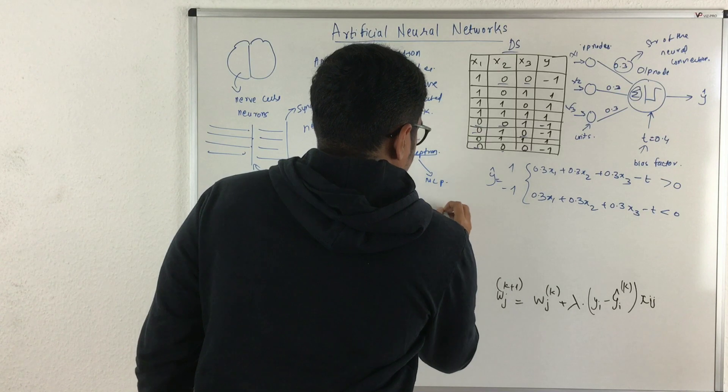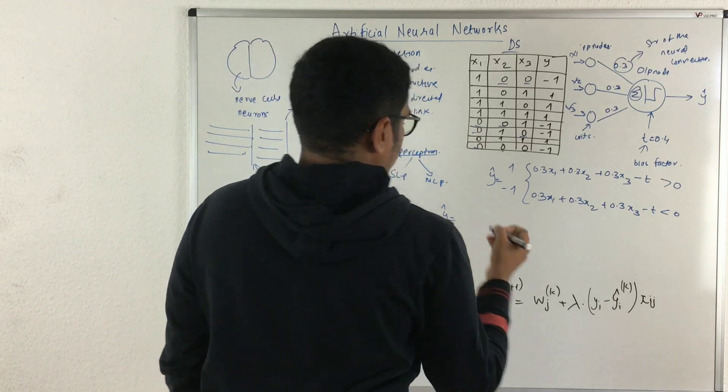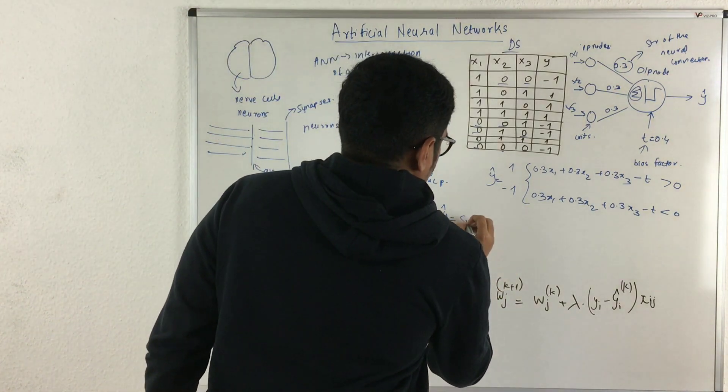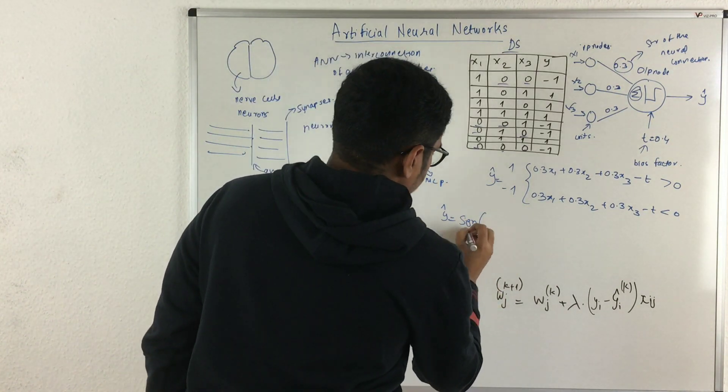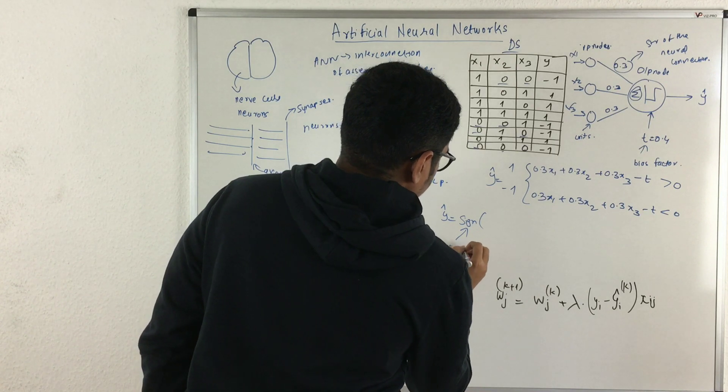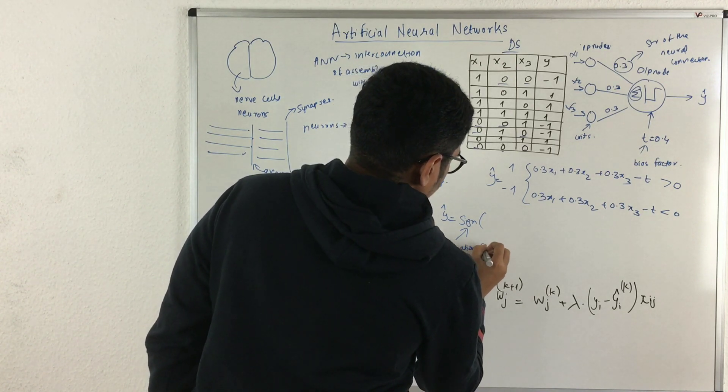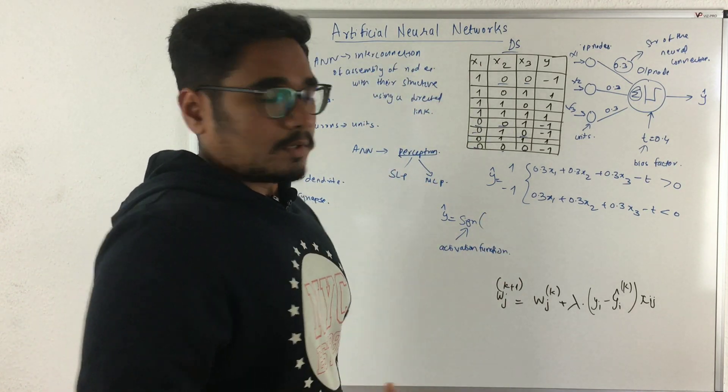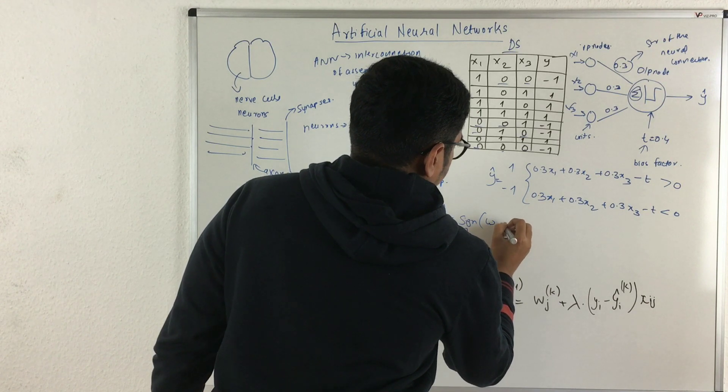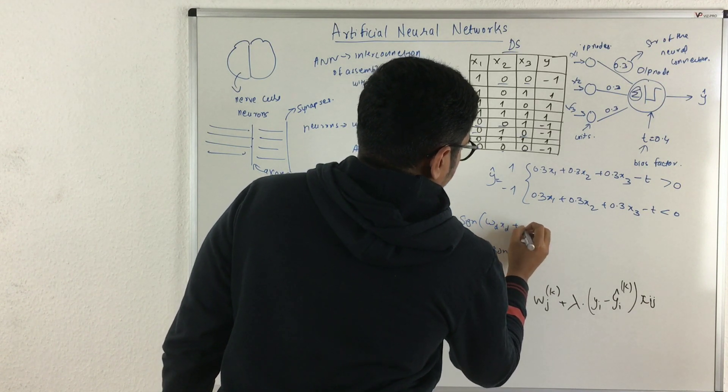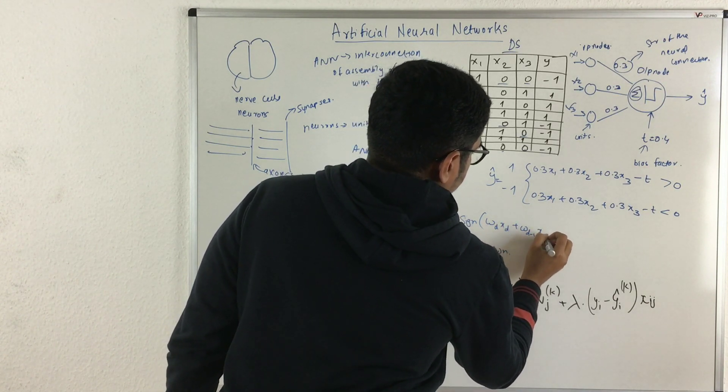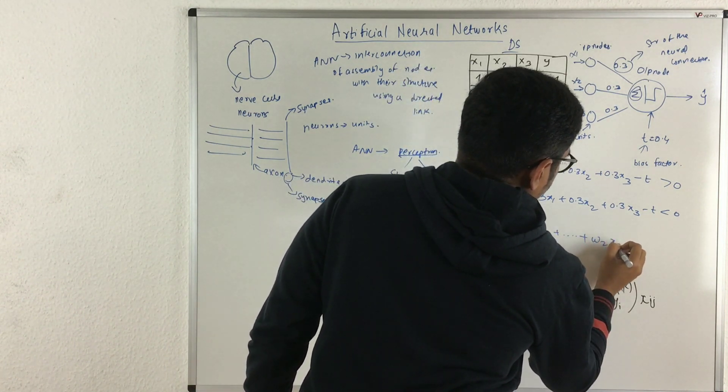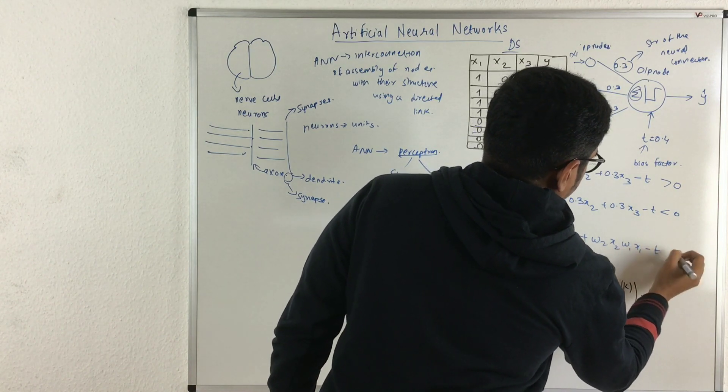This function can also be written in a more generalized way in terms of weights and input vectors. It can be written as a sign function, which is called an activation function. It basically activates your neural network or perceptron model. It's represented as wd·xd + wd-1·xd-1, up till you have w2·x2 + w1·x1 - t.